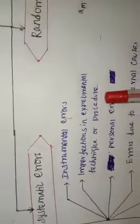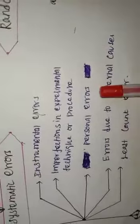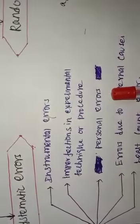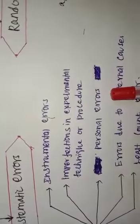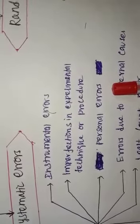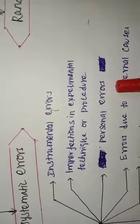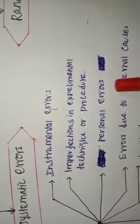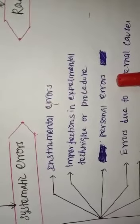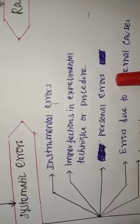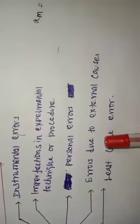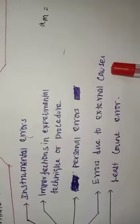Personal error is nothing but the error due to the person performing the experiment — maybe due to incorrect initial setting up of the experiment or carelessness of the person making the observation. This is called personal error.